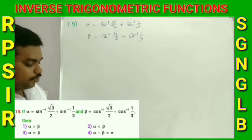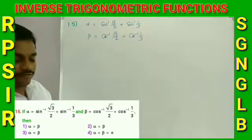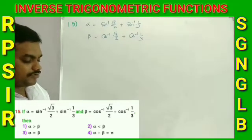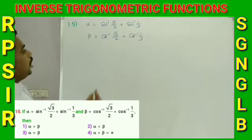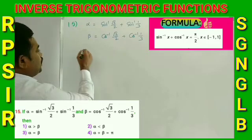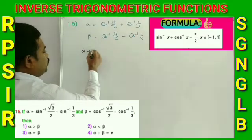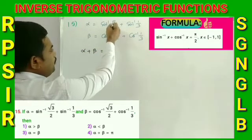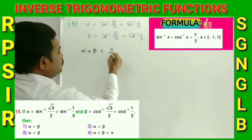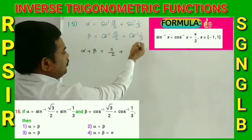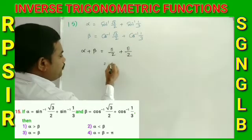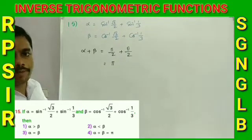Number 15: If α = sin⁻¹(√3/2) + sin⁻¹(1/3) and β = cos⁻¹(√3/2) + cos⁻¹(1/3), find α + β. Using sin⁻¹(x) + cos⁻¹(x) = π/2: α + β = [sin⁻¹(√3/2) + cos⁻¹(√3/2)] + [sin⁻¹(1/3) + cos⁻¹(1/3)] = π/2 + π/2 = π. Therefore α + β = π.